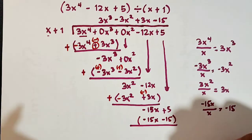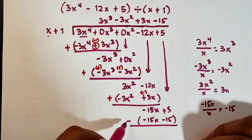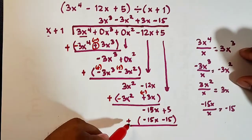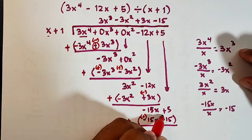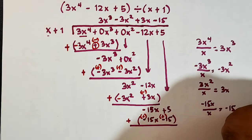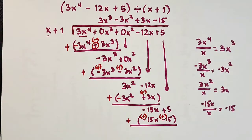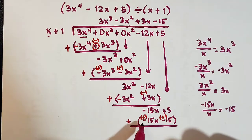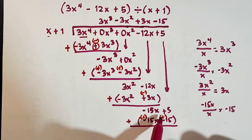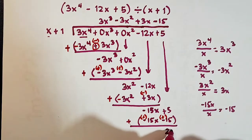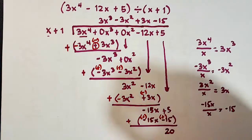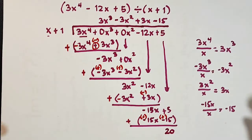The subtraction becomes addition: from negative it becomes positive. So negative 15x plus positive 15x is zero. And 5 plus positive 15 is 20. That 20 will serve as your remainder.